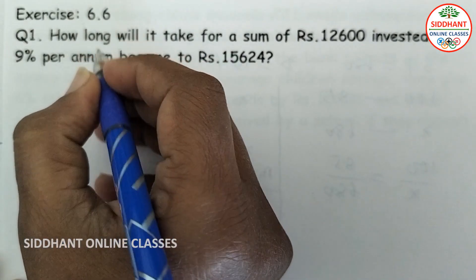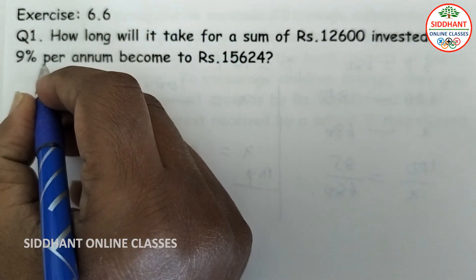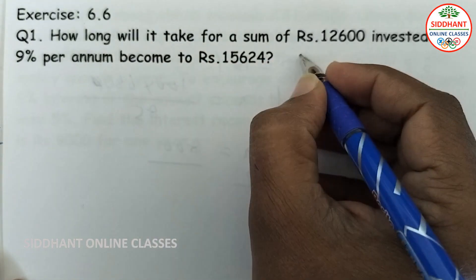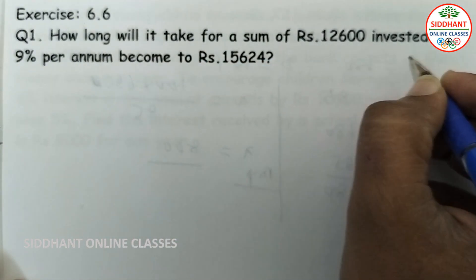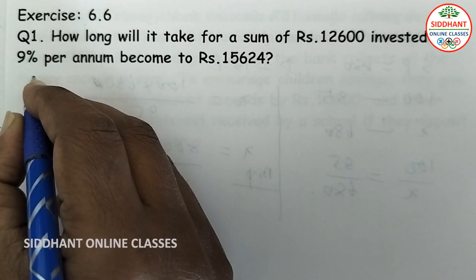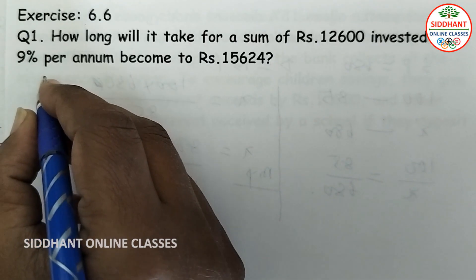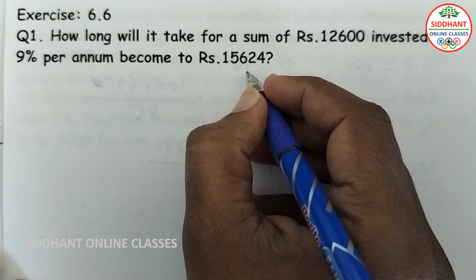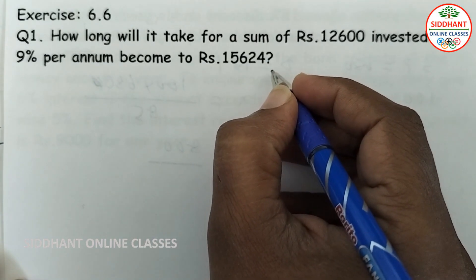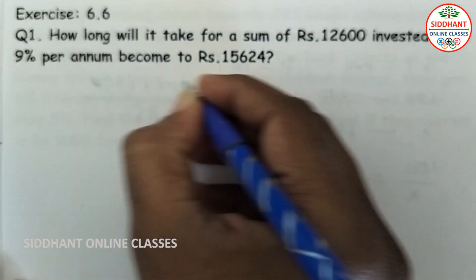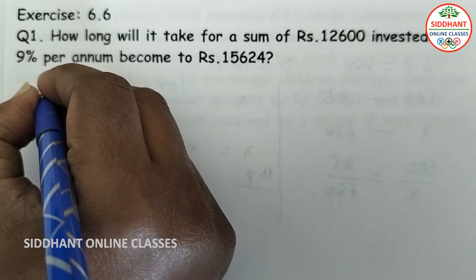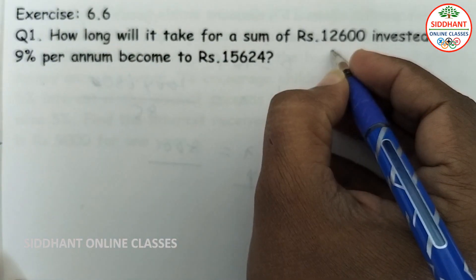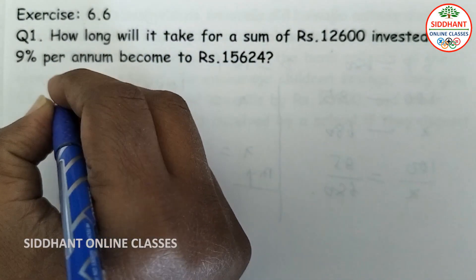Exercise 6.6, Question number 1. How long will it take for a sum of Rs.12,600 invested at 9% per annum to become Rs.15,624? So here the data given is: the principal amount is Rs.12,600 and the amount is Rs.15,624.